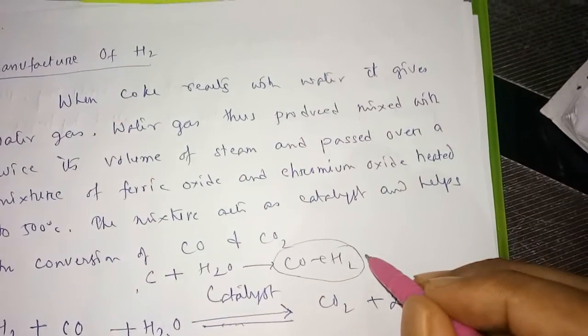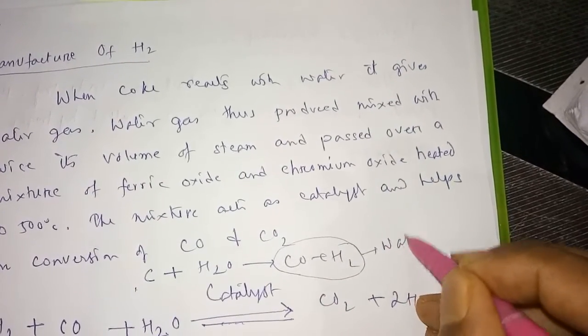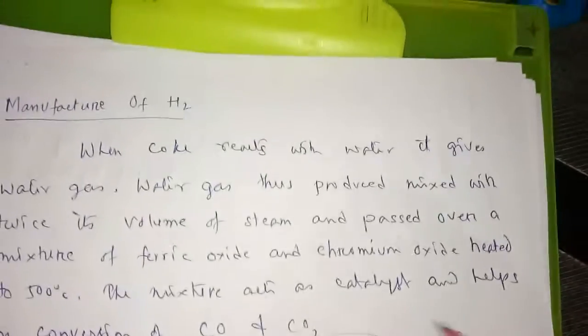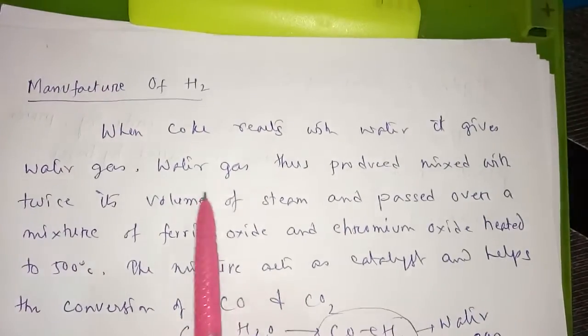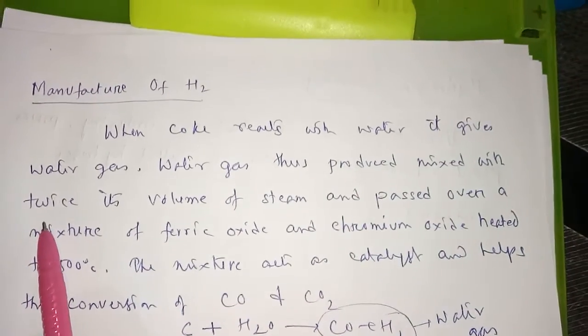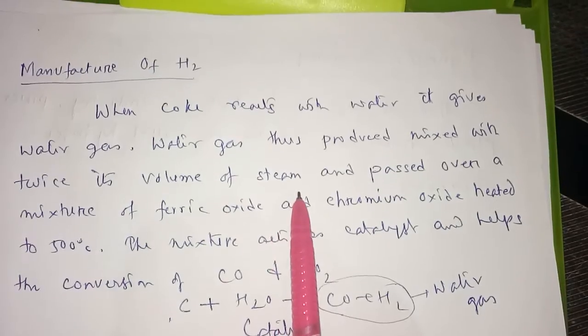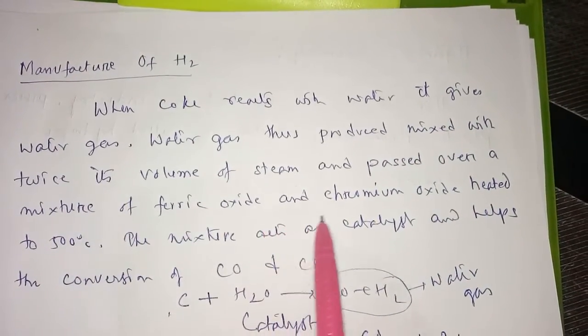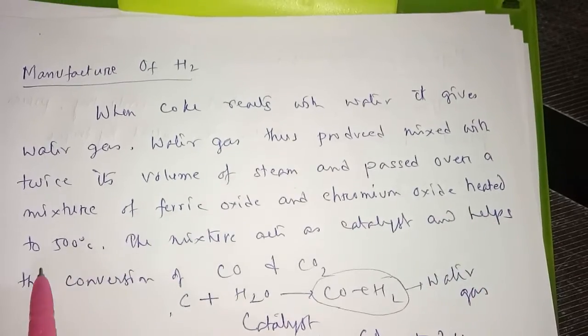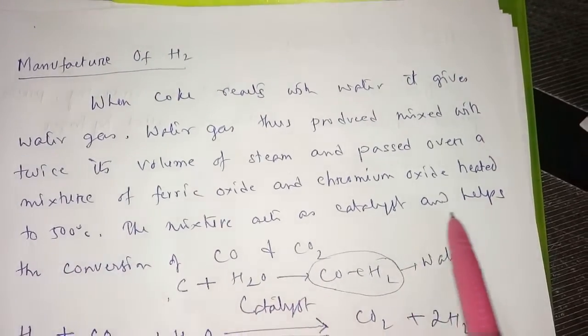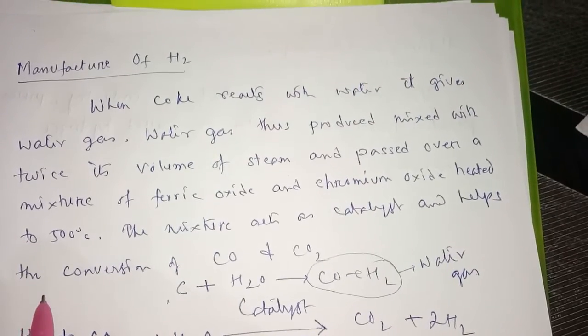This water gas thus produced is mixed with twice its volume of steam and passed over a mixture of ferric oxide and chromium oxide heated to 500 degrees centigrade. The mixture acts as a catalyst and helps the conversion of carbon monoxide to carbon dioxide.